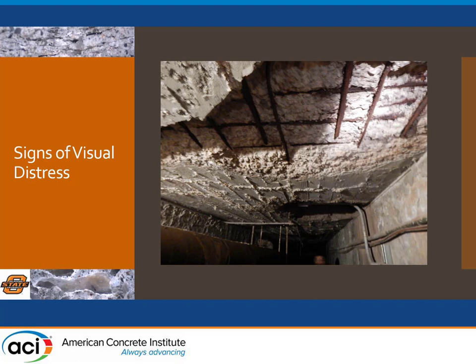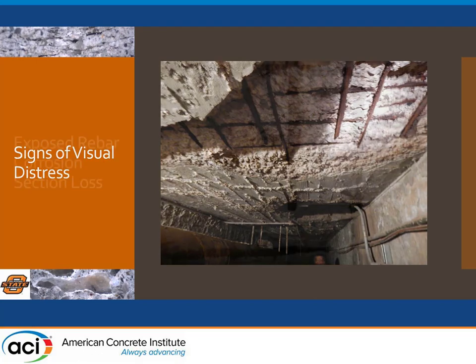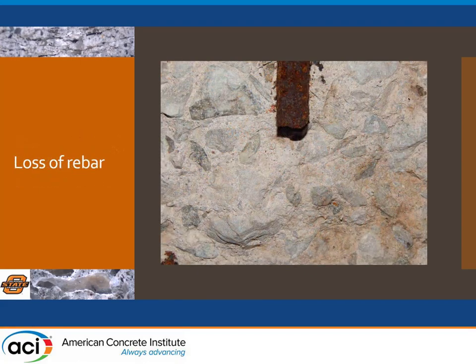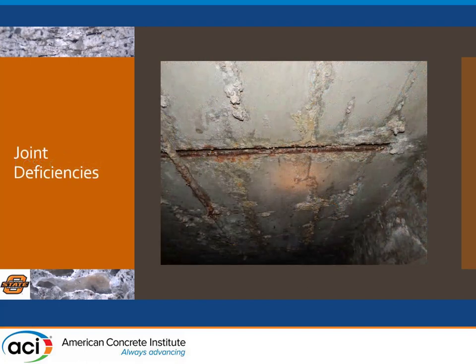Looking more closely, we had severely corroded rebar with significant section loss — and more than section loss, we had rebar loss altogether. Some rebars were completely gone from the section. When we opened a delaminated area where rebar was supposed to be, the question you had to ask was: where is the rebar? Then examining the joints, they were obviously not working properly — severely corroded, with salt accumulation blocking them completely and preventing them from functioning to their purpose.